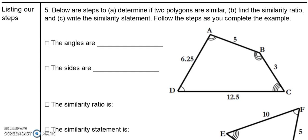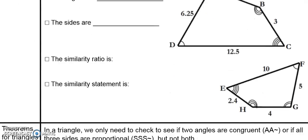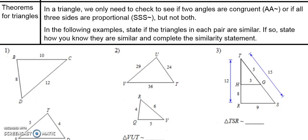Hey, this is Mr. Jaynes. In this video we'll be talking about how to determine if two polygons are similar, then find a similarity ratio between those two polygons, and finally write a similarity statement using letters of the vertices between the two polygons to show that they're actually similar. So we'll follow the three steps in these examples. First, we'll do one together with these two quadrilaterals, and then we'll do a few on our own with triangles.